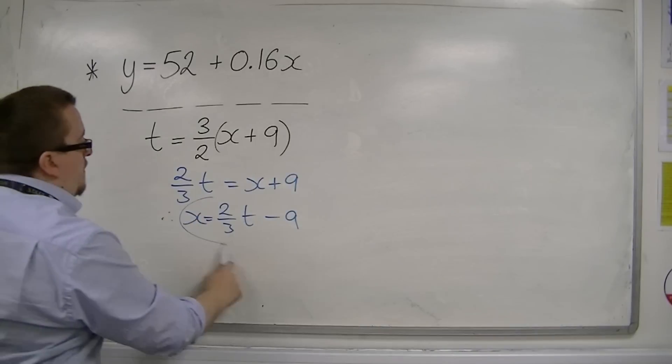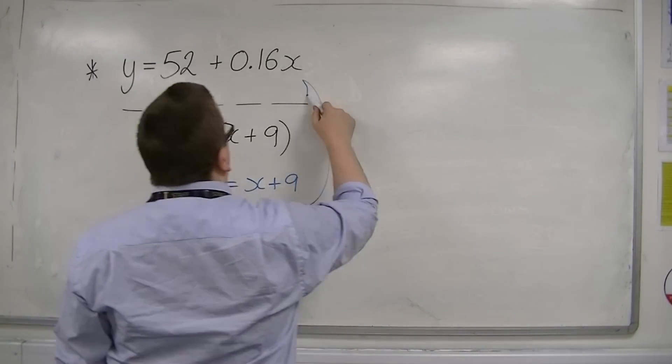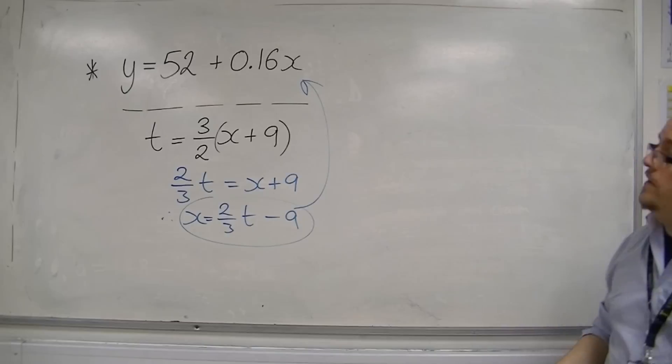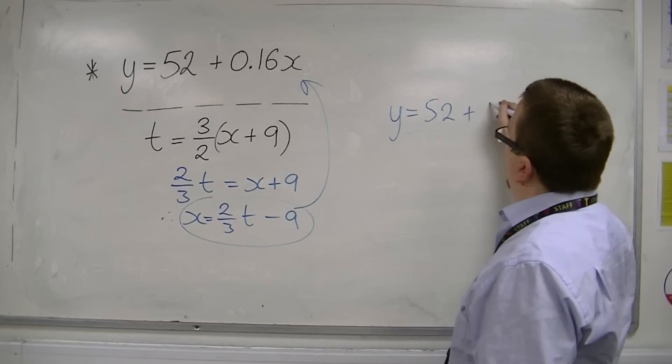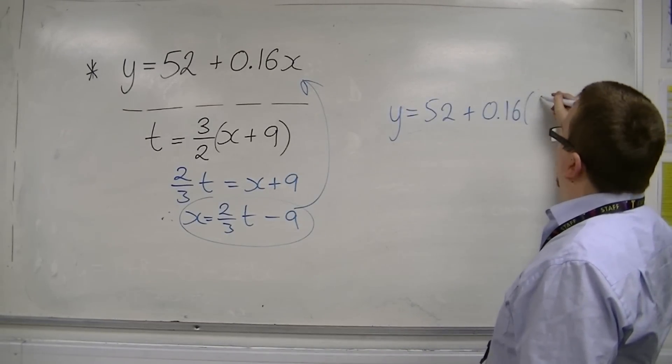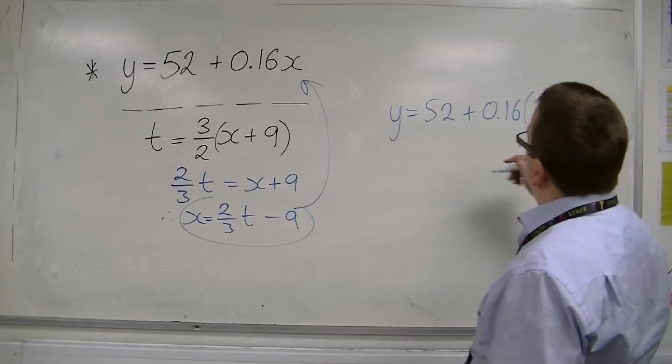So I'm going to substitute that into my least squares regression line. So y is equal to 52 plus 0.16 times two thirds t minus 9.